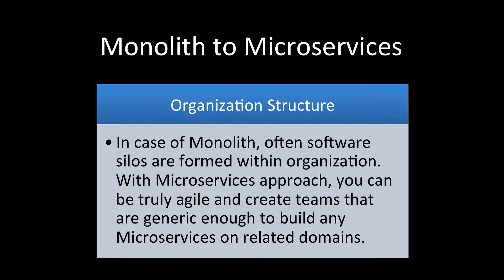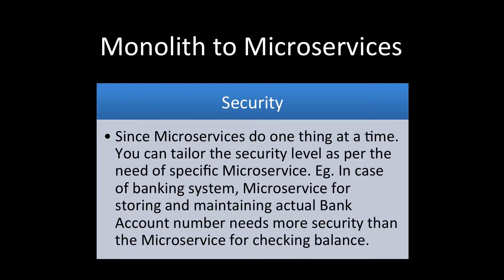Then comes organization structure. In a monolith, teams are formed in silos — teams within an organization may not communicate well with each other and may not be truly agile. In a microservices approach, you can have truly agile teams that are generic enough to build any microservice in a related domain. The technical concepts remain the same, so you can achieve a very good organization structure and better team efficiency.